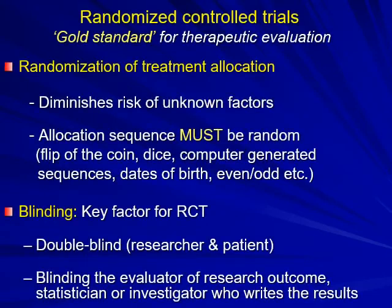A randomized controlled study is the gold standard for therapeutic evaluation. How is it done? We randomize treatment allocation. If we have more than one group, we do not just allocate them haphazardly. We have to randomize the allocation, either by closed envelopes or by flip of the coins, etc., because this diminishes the risk of unknown factors.